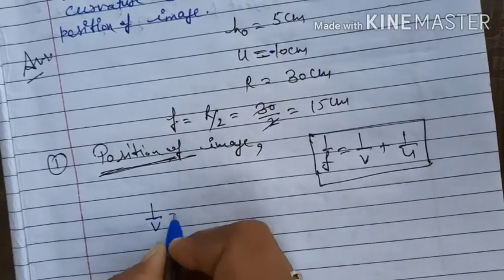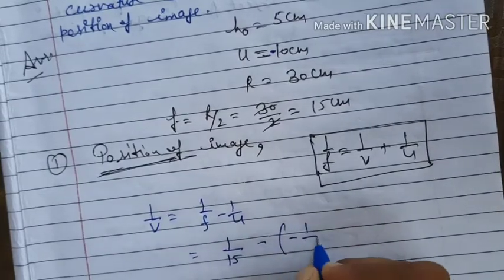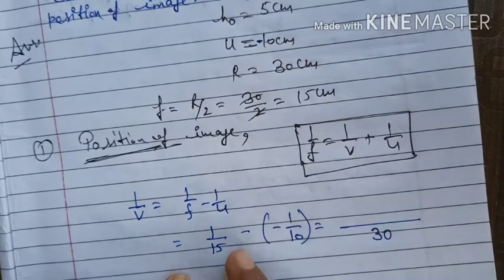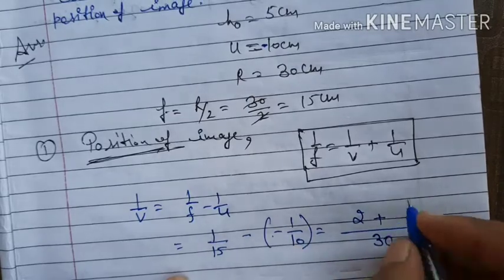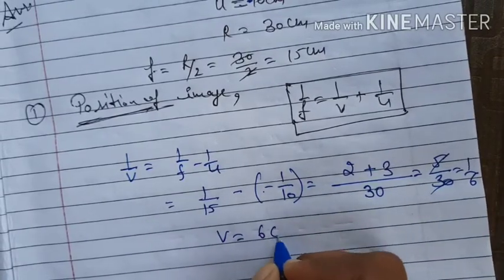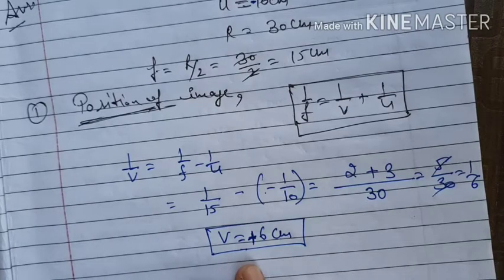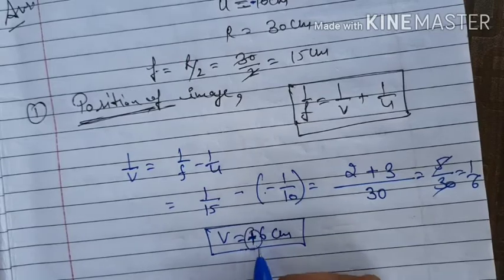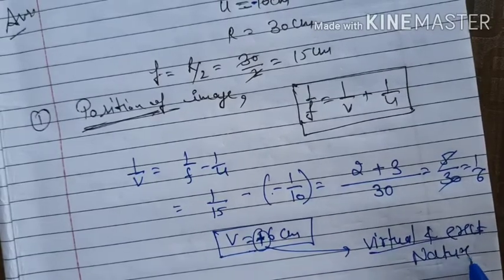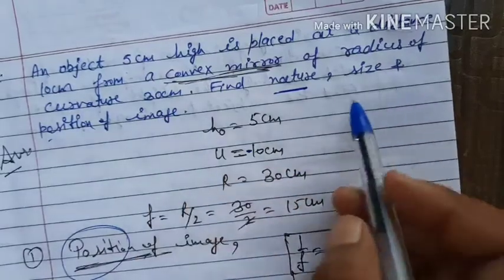Applying mirror formula: 1/v = 1/f − 1/u = 1/15 − (−1/10) = 1/15 + 1/10. Taking LCM as 30: 2/30 + 3/30 = 5/30 = 1/6. So v = +6 centimeters. Since v is positive, the image is virtual and erect — as expected for a convex mirror.